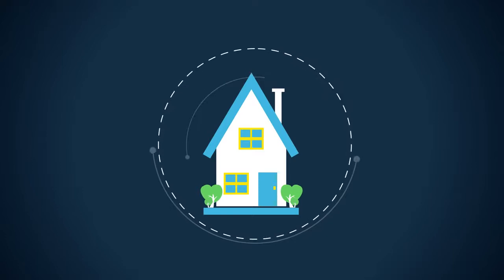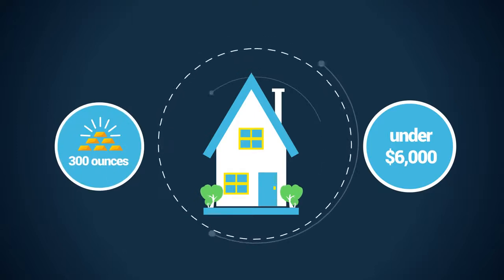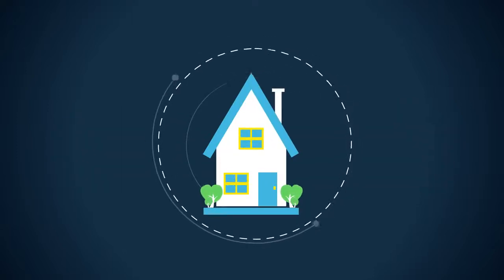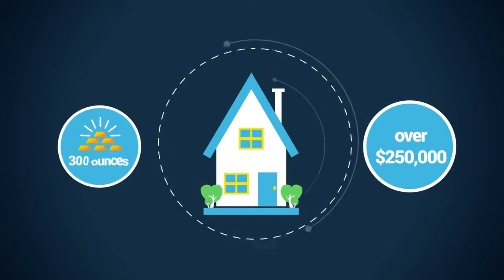One hundred years ago in the U.S., you could buy a median average home for under six thousand dollars, or less than three hundred ounces of gold. Today, the same median standard home is over two hundred and fifty thousand dollars, still less than three hundred ounces of gold.